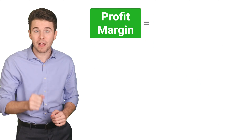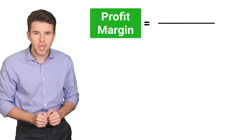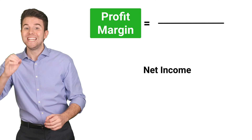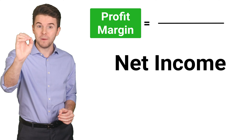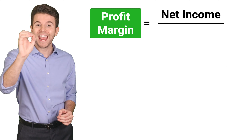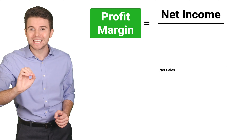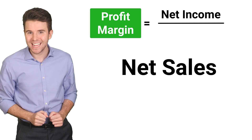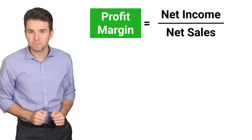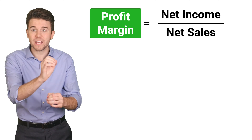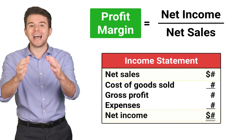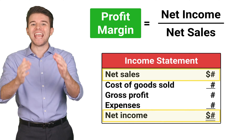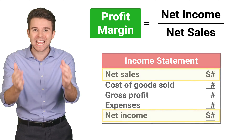To calculate profit margin, we take net income and divide it by net sales. Both of these figures can be found on a company's income statement.